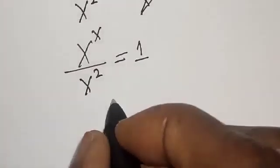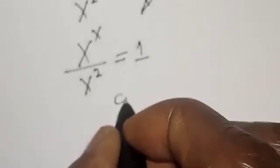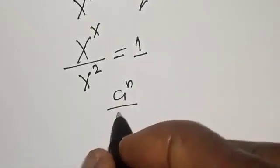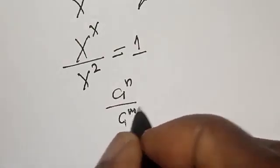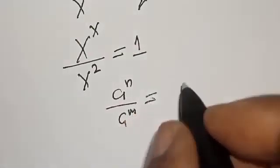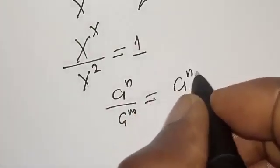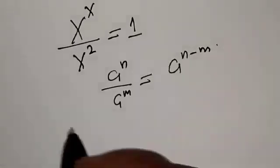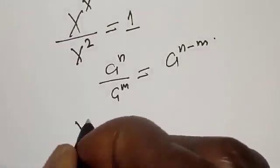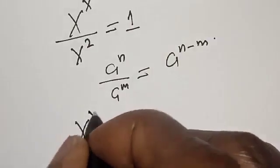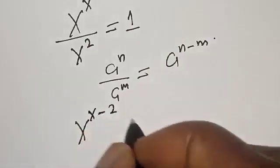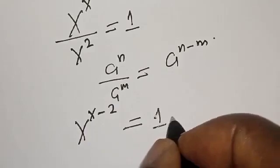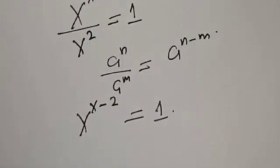Now remember that if you have a raised to power n over a raised to power m, this is the same thing as a raised to power n minus m. So our left hand side becomes s raised to power s minus two, which is equal to one.